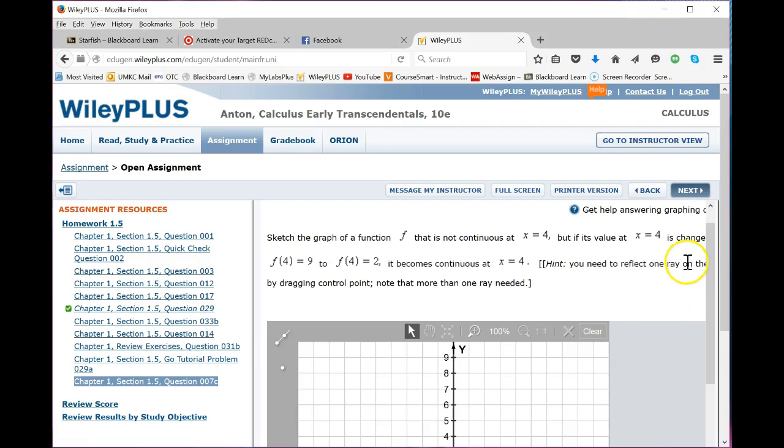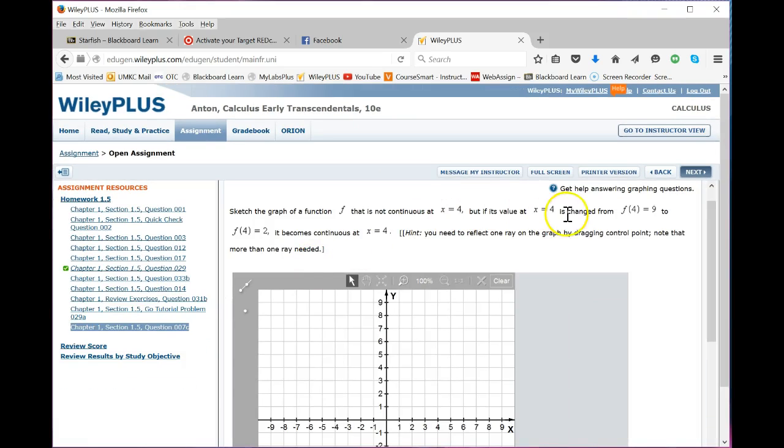The value at x equals 4, if we change that from f of 4 is 9 to f of 4 is 2, then it becomes continuous. So the first thing is we're going to need two rays, so we're going to just drag the rays over here.